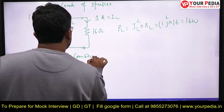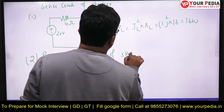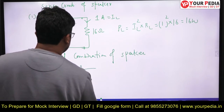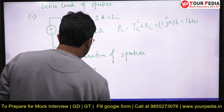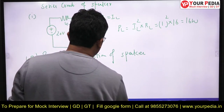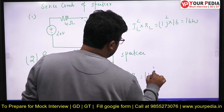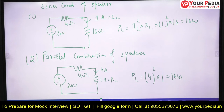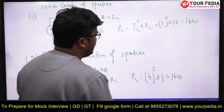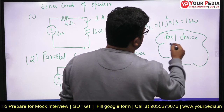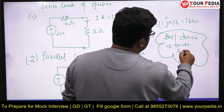For the parallel combination of speakers: the circuit has 20V source, 4-ohm internal resistance, and equivalent load resistance of 1 ohm. The current is 20/(4+1) = 4 amperes. The load power PL = 4² × 1 = 16 watts. Using a single speaker gives 25 watts. So the best and loudest choice is surprisingly the single speaker.